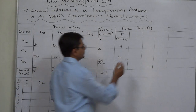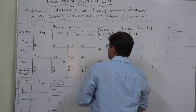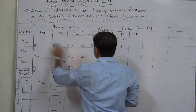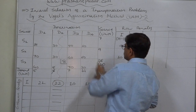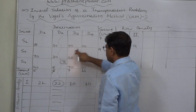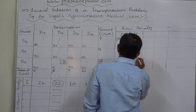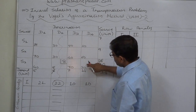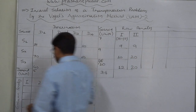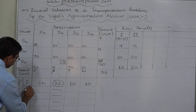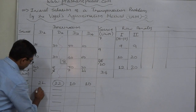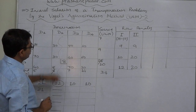Second trial for the remaining table. In row S1, the least cost is 10 and immediate higher is 19, so the penalty remains 9. In row S2, the least cost is now 40 and immediate higher is 60, so the penalty is 60 minus 40 equals 20. In row S3, the least cost is 20 and immediate higher is 40, so the penalty is 20. For column D1, the least cost is 19 and immediate higher is 40, so the penalty is 21.